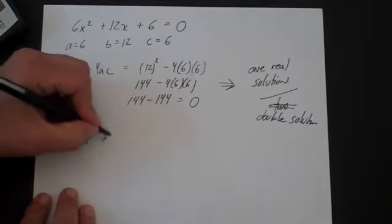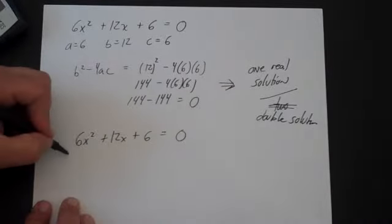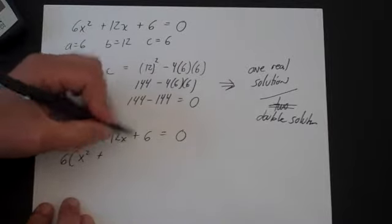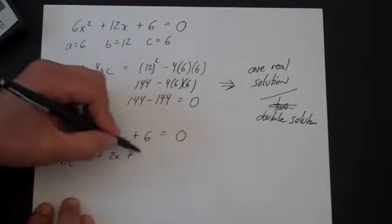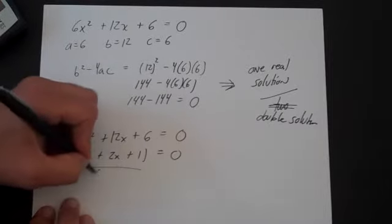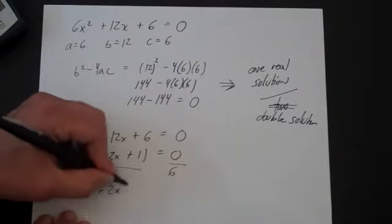And let's think about what that means. 6x squared plus 12x plus 6 is equal to zero. Let's factor it. Let's factor a 6 out. Factor a 6 out, you get x squared plus 2x plus 1. I'm going to divide both sides by 6 and I get x squared plus 2x plus 1 equals zero.